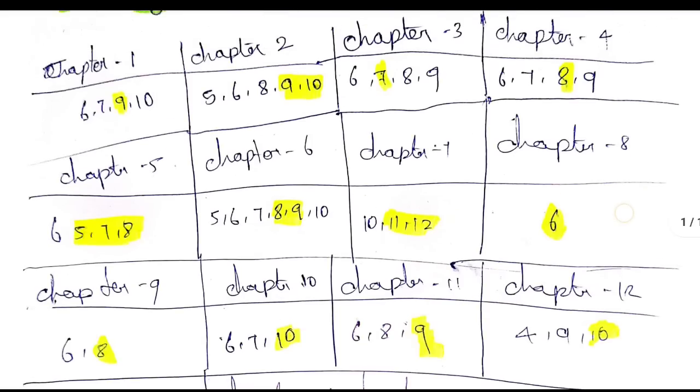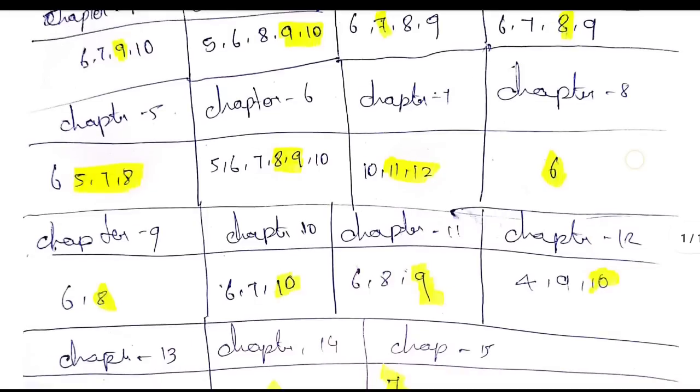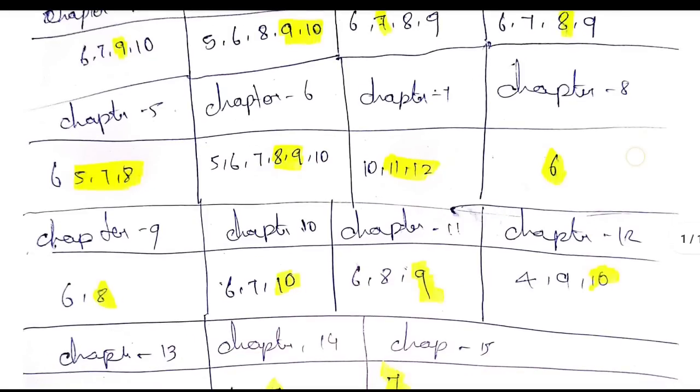Chapter 6: question numbers 5, 6, 7, 8, 9, and 10 are important. Questions 8 and 9 are 5-mark questions.